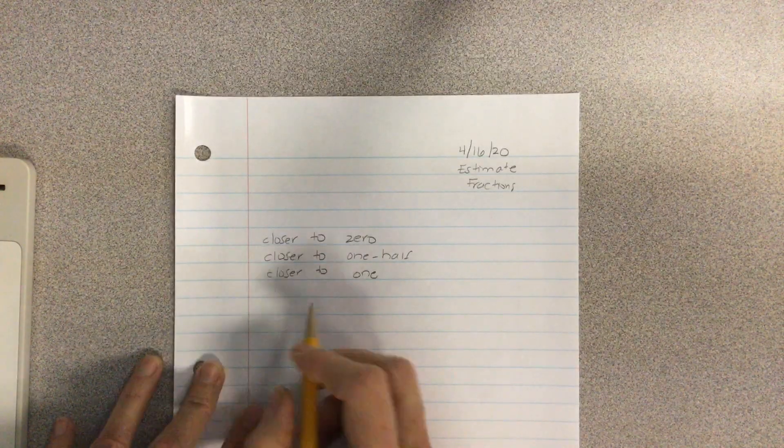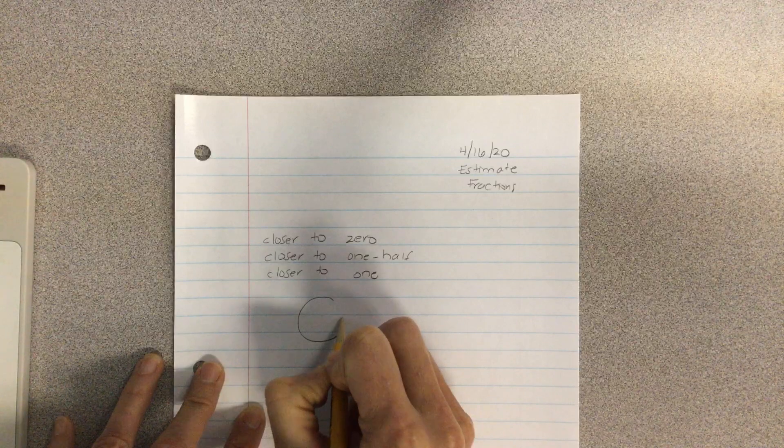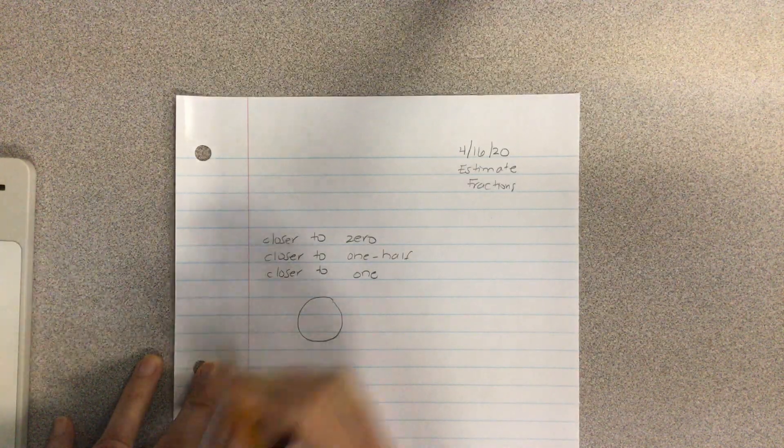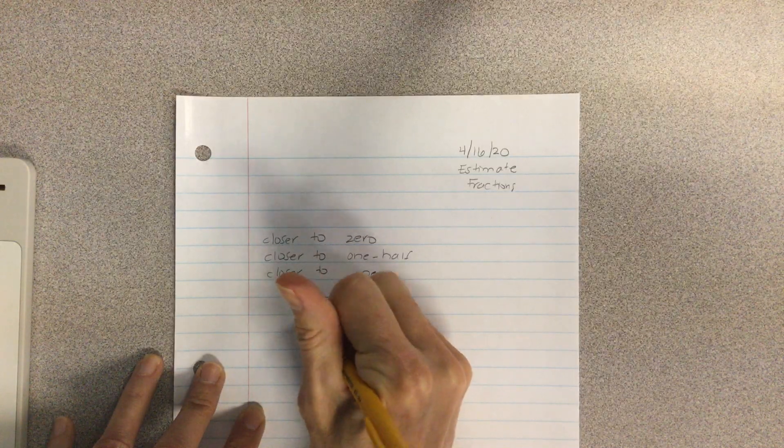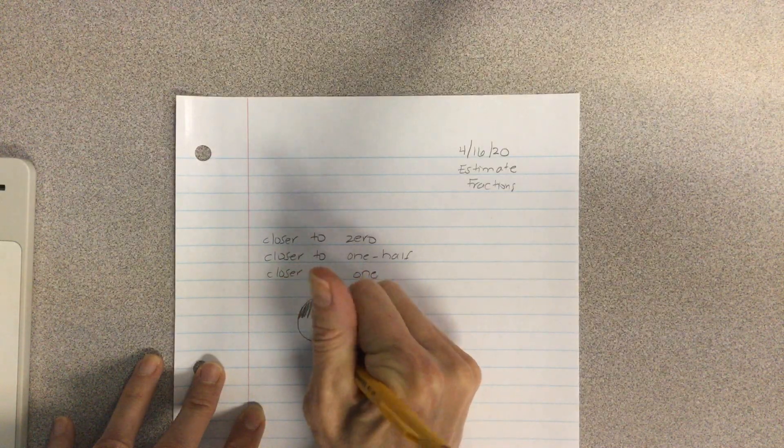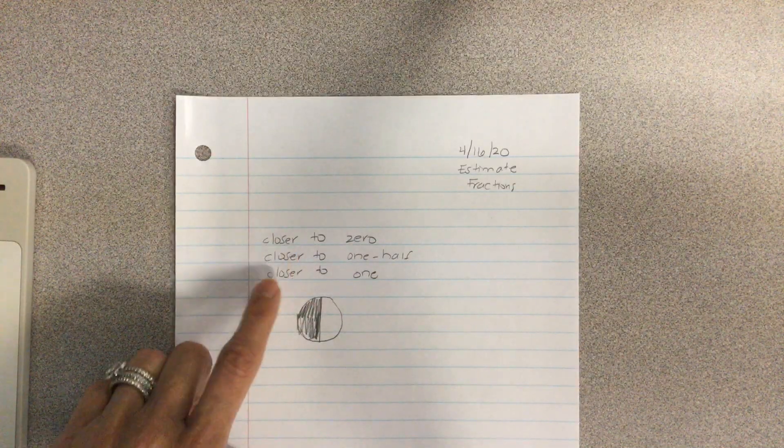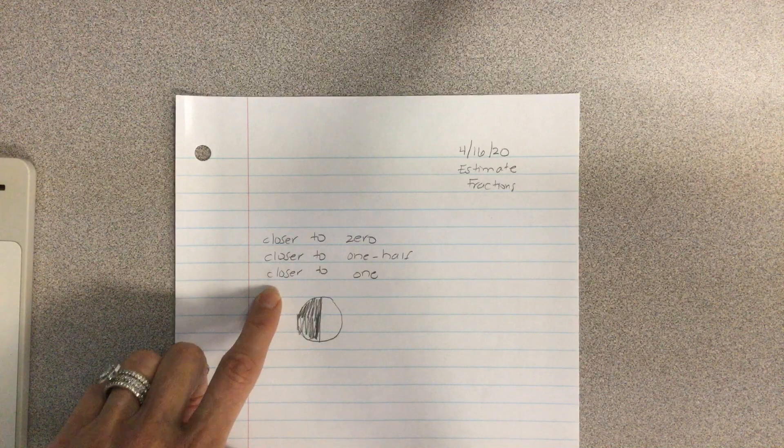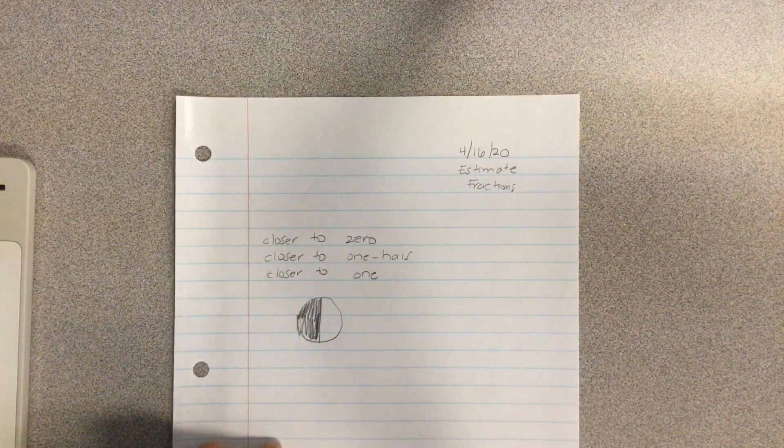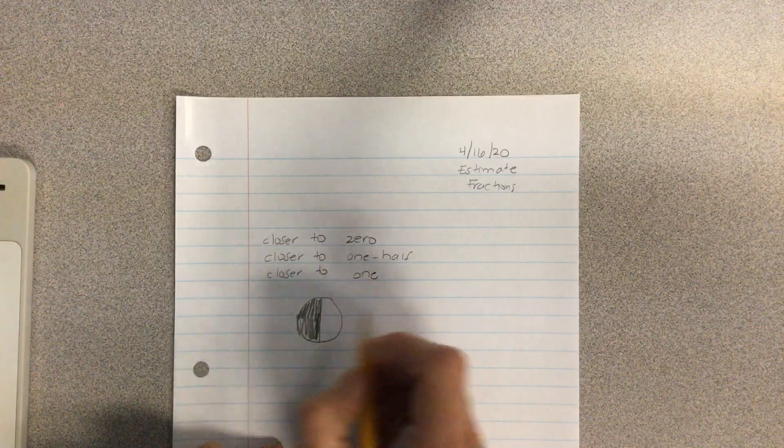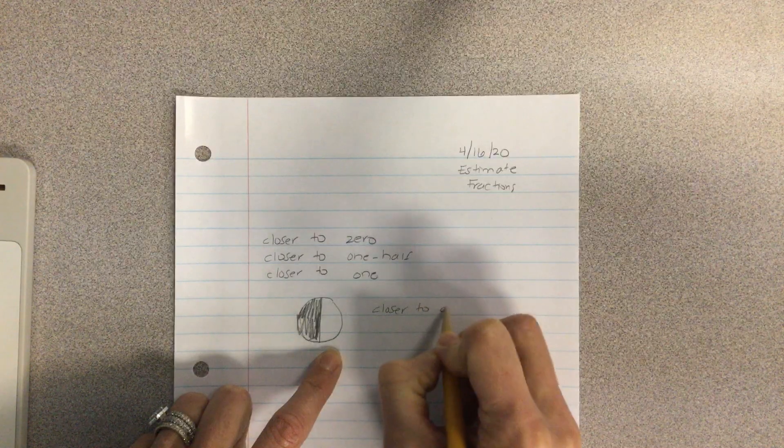So if you're thinking about a circle, and let's say on that circle, you have this much shaded. If we're following these rules, closer to zero, closer to one half, or closer to one, looking at this circle, which one would you think that would be? Well, yes, if you think about the whole circle, this one would be closer to one half.